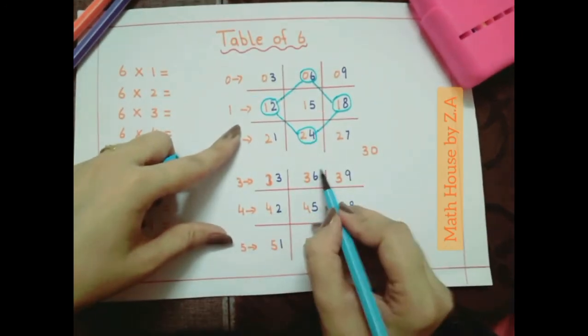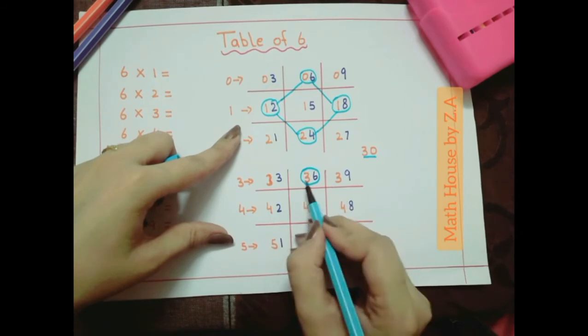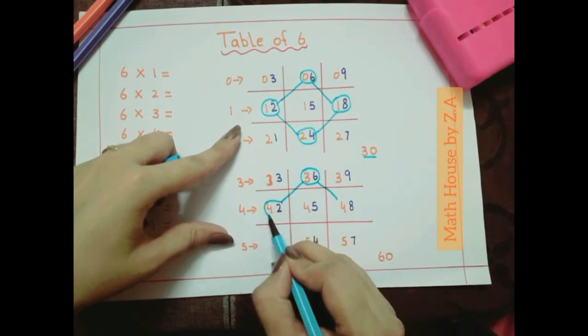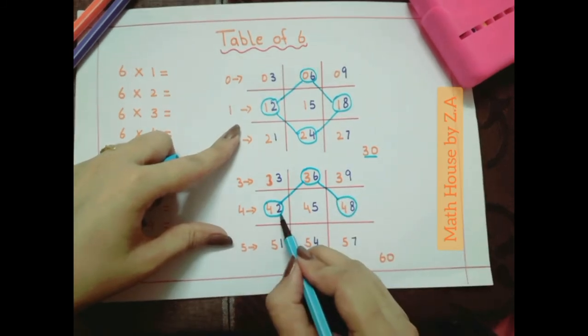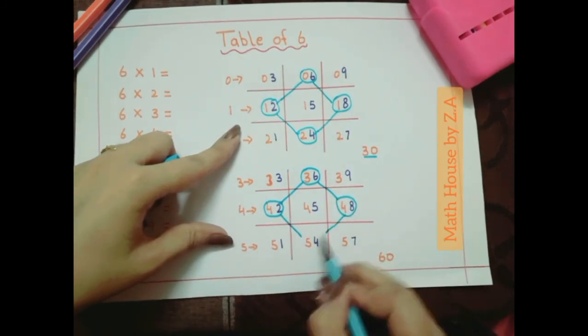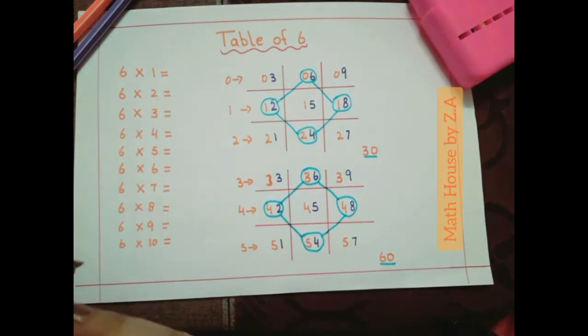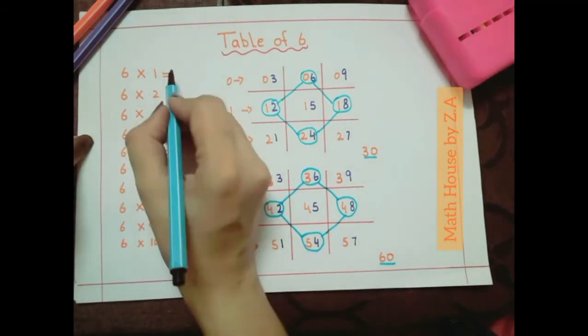After 24, 30 and then circle the number in same way you circled in first grid. So 48 and now connect 42 and 48 with 54 and the last digit of your table is 60. So all these numbers we are going to use to write the table of 6.